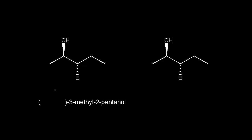Now let's look at a compound with two chiral centers. Our goal is to finish naming this molecule. If I number my carbons, this would be carbon one, two, three, four, five. There's an OH at carbon two, and there are five carbons, so that's where we get the two-pentanol. There's a methyl group at carbon three, so that's 3-methyl-2-pentanol.